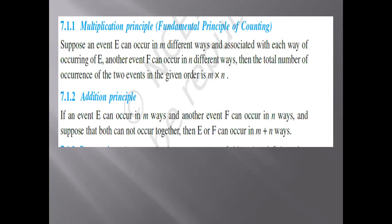For the addition principle, we use the 'OR' conjunction. If an event E occurs in m ways and event F occurs in n different ways, then the total number of occurrences of E or F will be m plus n. So the addition principle is used when the task is completed by either one of the events occurring.